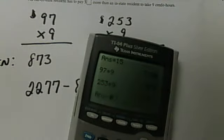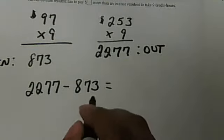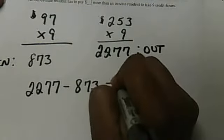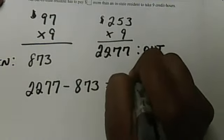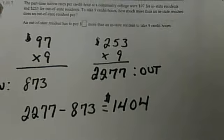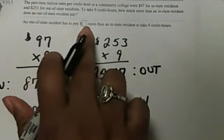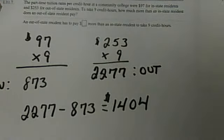...you find out that the out-of-state resident pays $1,404 more than the in-state student. So the question is, an out-of-state resident has to pay $1,404 more than an in-state resident to take the same nine credits. So your answer to this problem will be $1,404.